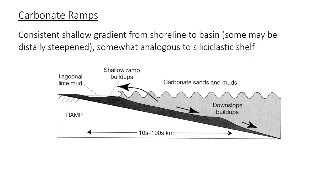So what is a carbonate ramp? It's basically just a gently sloping surface — hence the name ramp — that has a fairly consistent gradient from the shoreline to the deeper parts of the basin. Sometimes the gradient gets a little bit steeper at the offshore end of the ramp, and then it's called a distally steepened ramp.